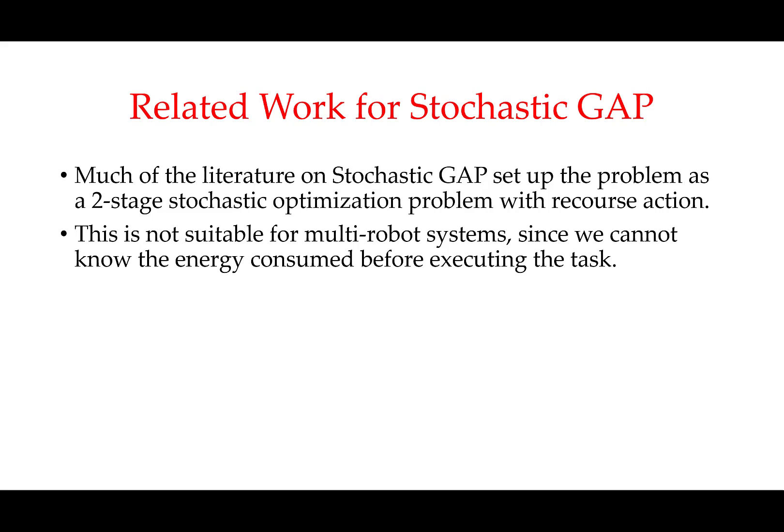There is some literature on the stochastic generalized assignment problem. In some cases the payoff parameter is assumed stochastic; in others, the resource consumption parameter is stochastic. But most of these problems are modeled as two-stage stochastic optimization problems with recourse action — you make decisions while ignoring uncertainty, then the uncertain resource consumption variables are revealed and the assignment can be changed based on realized values, with some penalty for changing the decision. The two-stage stochastic optimization problem is not appropriate for multi-robot applications because we cannot know the energy consumed before executing the task.